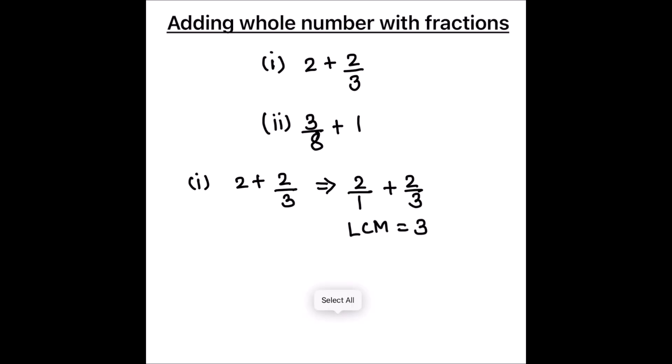Now we will make the denominators of both fractions equal to 3. To make the denominator of 2 upon 1 equal to 3, we need to multiply the denominator by 3. And as we are multiplying the denominator by 3, we need to multiply the numerator 2 by 3 as well. The denominator of the second fraction is already 3, so we are not going to change it.